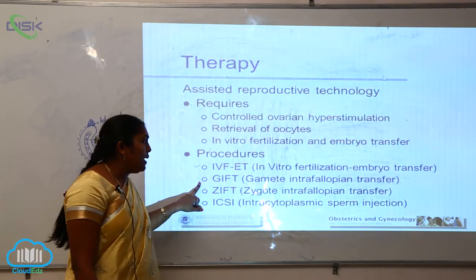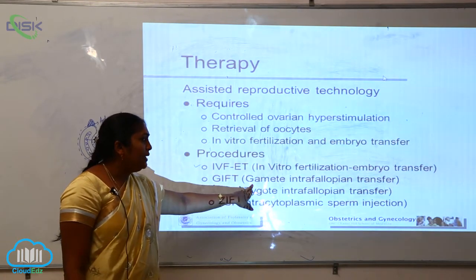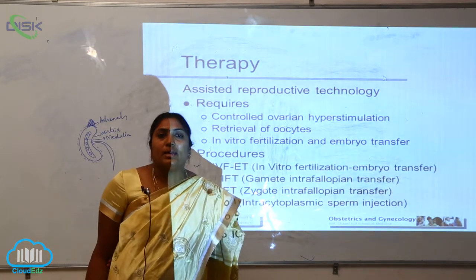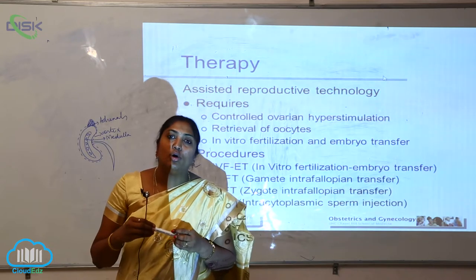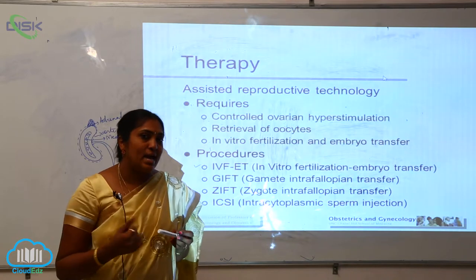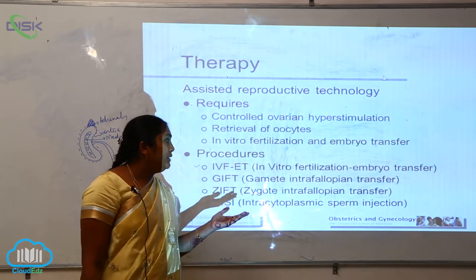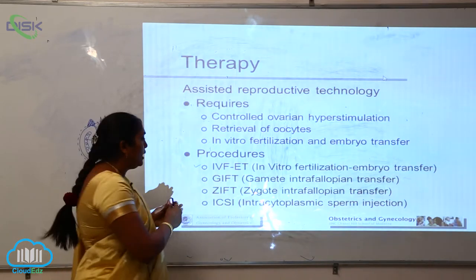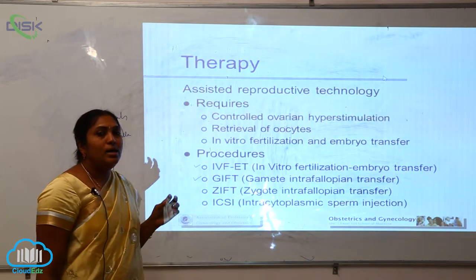The second important procedure is GIFT — Gamete Intra Fallopian Transfer. This is used when the female has a problem with the fallopian tubes, such as not properly secreting the important enzymes or hormones. GIFT is considered a gift to infertile individuals and is an assisted reproductive technology therapy.